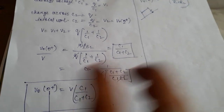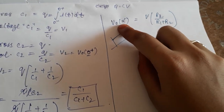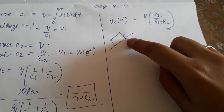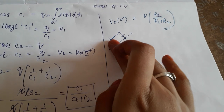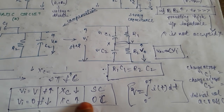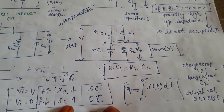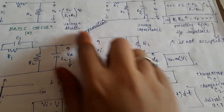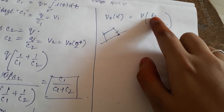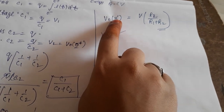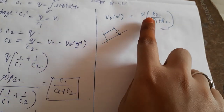Now let us consider t = ∞. At this time, the step input has settled — the input voltage is constant, frequency approaches zero, XC becomes very large, and the capacitors act as open circuits. The voltage can then be obtained across the resistors only. So the output voltage at infinity is V0(∞) = V × R2 / (R1 + R2). This is the voltage at infinite time using the compensated circuit.